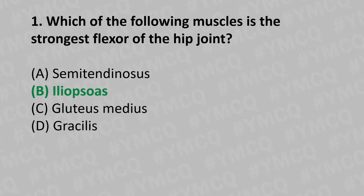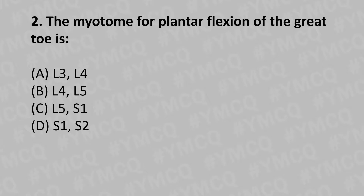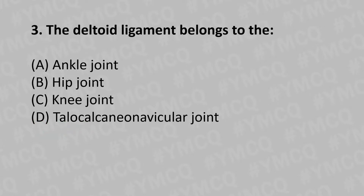Moving to our second question: the myotome of plantar flexion of the great toe is — Option A: L3-L4, Option B: L4-L5, Option C: L5-S1, Option D: S1-S2. And the answer is Option D: S1-S2. Moving to our third question: the deltoid ligament belongs to — Option A: ankle joint, Option B: hip joint, Option C: knee joint, Option D: calcaneonavicular joint. And the answer is Option A: ankle joint.